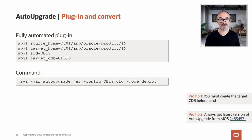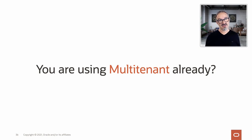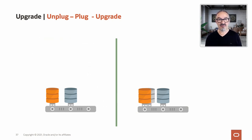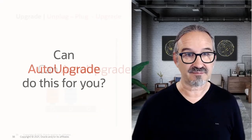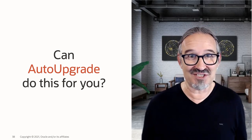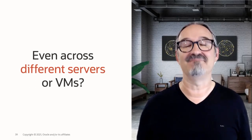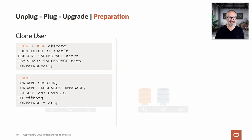Remember, this is our pro tip number two: always download the newest auto-upgrade because the version you get from the MOS note is guaranteed newer than the one you have on disk. This is a general rule for auto-upgrade always. Now, if you're already using multi-tenant, we added this part to today's presentation: unplug-plug-upgrade. On the new server, we have a new CDB of higher release, and we can let auto-upgrade unplug, plug, and then upgrade across servers. That's brand new — auto-upgrade can do this for you across different servers or VMs.